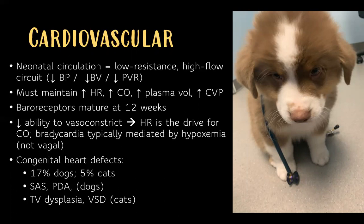Their sympathetic nervous system isn't fully developed, so they can't generate a sympathetic or parasympathetic response similar to adults. Congenital heart defects are found in about 17% of dogs and 5% of cats — subaortic stenosis and PDAs in dogs, and tricuspid valve dysplasia and ventricular septal defects most commonly in cats.